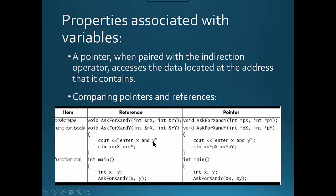Some more properties associated with variables: a pointer, when paired with the indirection operator, accesses the data. When using references, we just use the variable names. But with pointers, we have to dereference the pointer with the asterisk when we're using it.